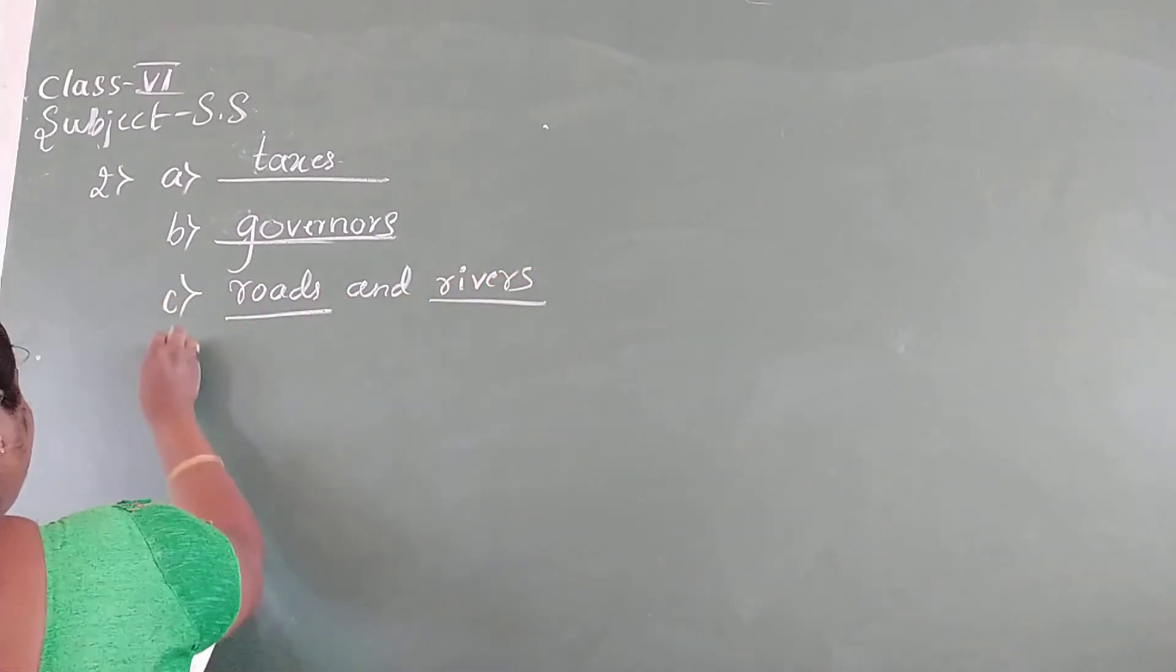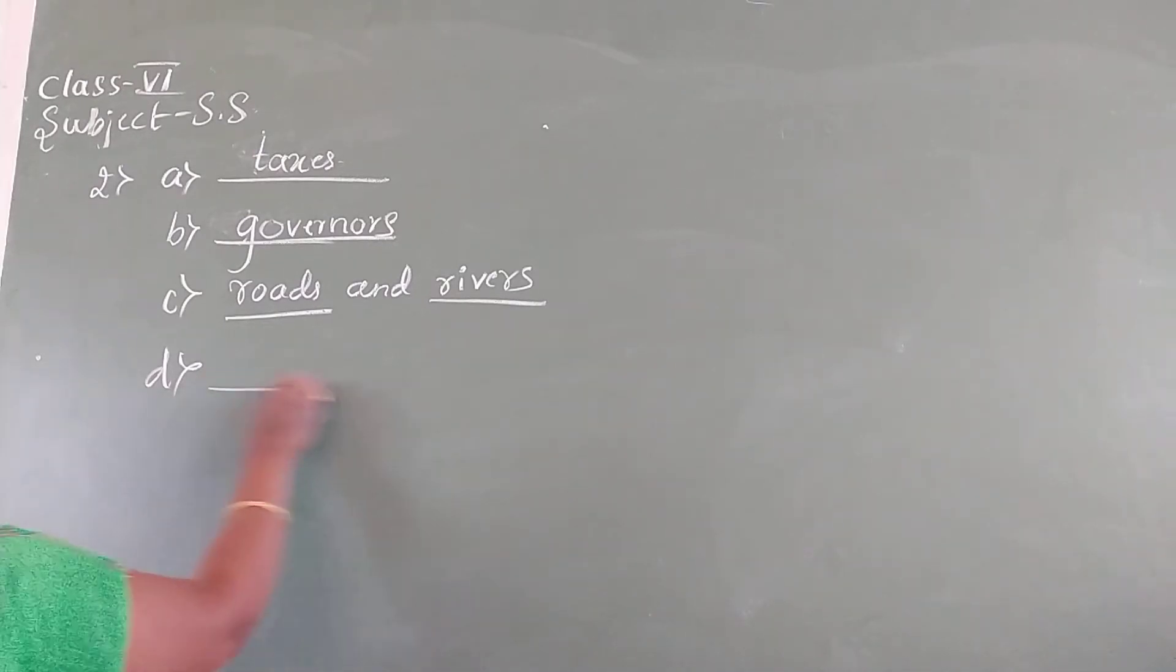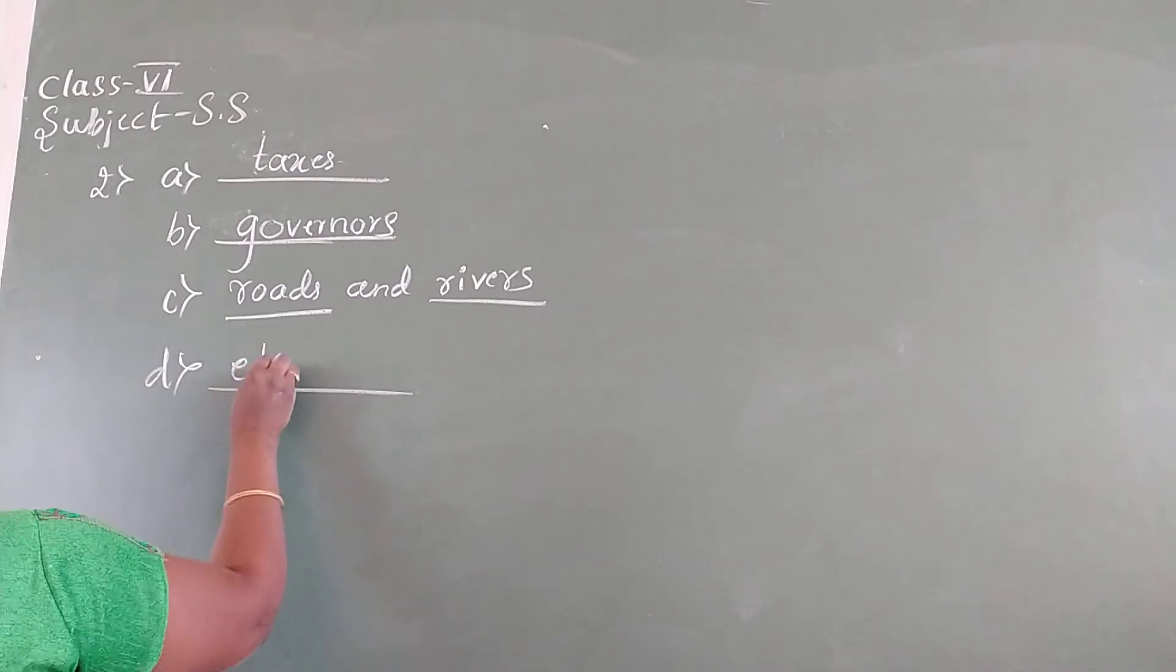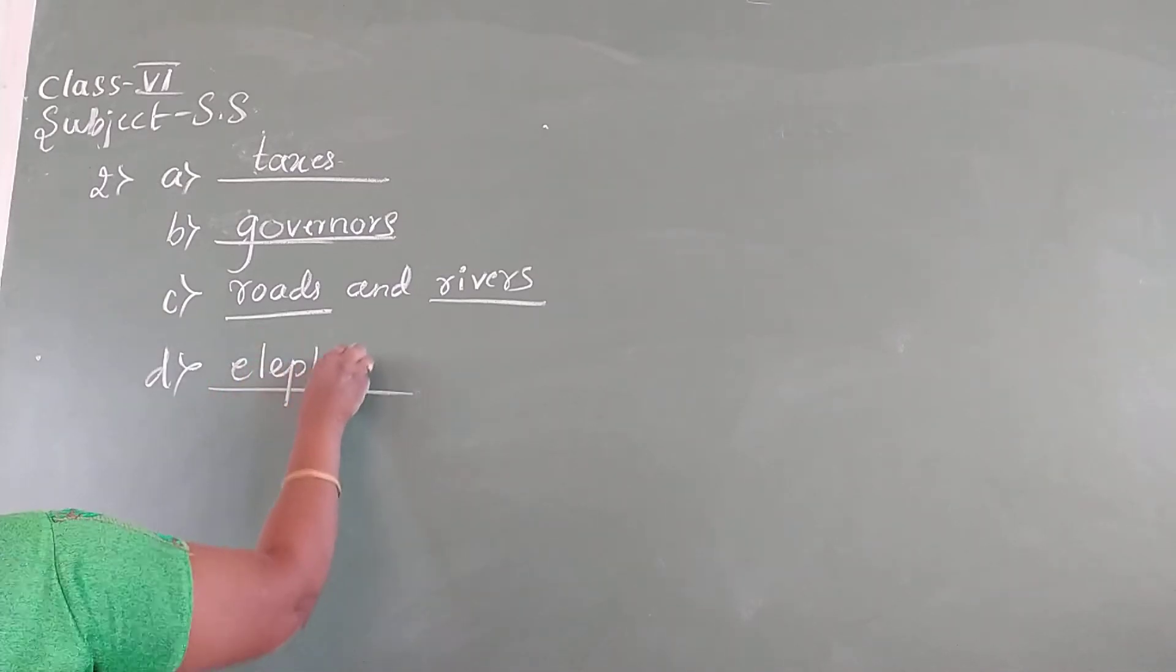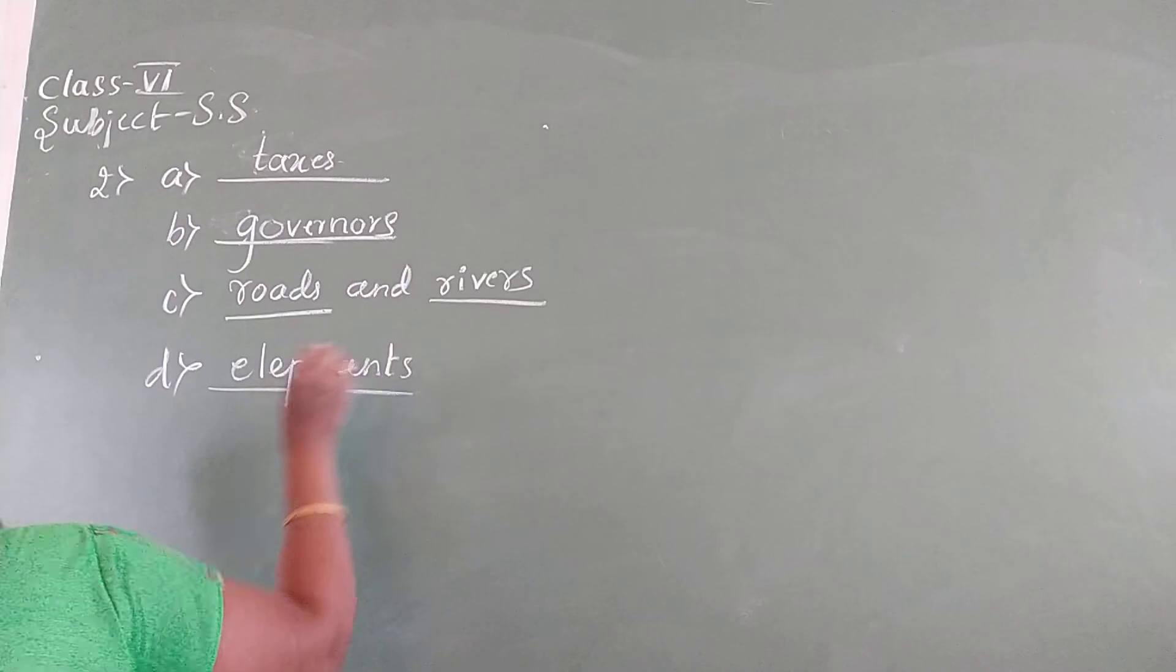C. The Mauryan rulers tried to control blank and blank which were important for transport. That is roads and rivers. D. People in forested regions provided the Mauryan officials with elephants. They provided elephants to the Mauryan officials.